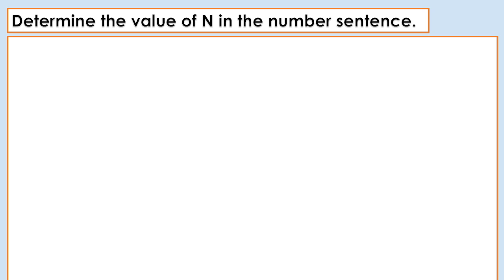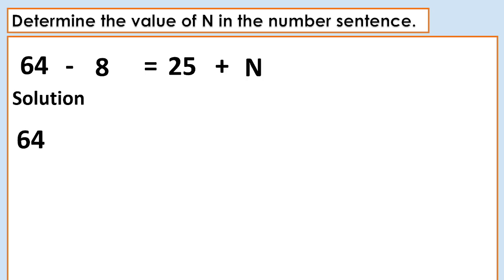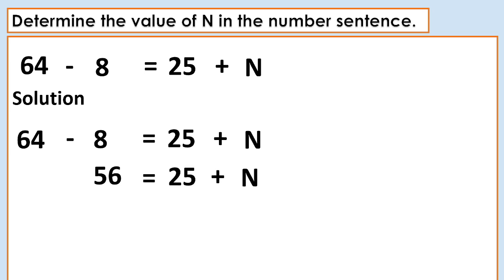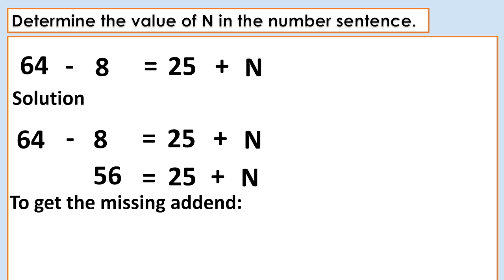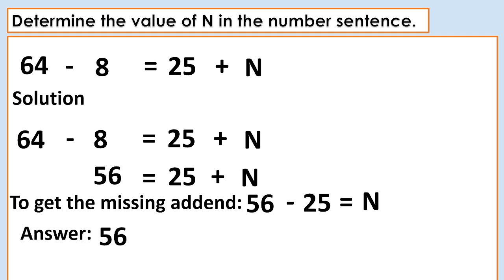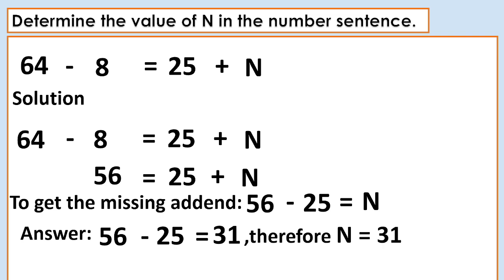Another: 64 minus 8 equals 25 plus n. Solution: 64 minus 8 equals 56, and 56 equals 25 plus n. To get the missing addend, 56 minus 25 equals n. The answer is 56 minus 25 equals 31. Therefore, n equals 31.